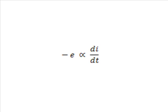Now, mathematically this can be written as minus E proportional to dI/dt. Where minus E is the induced counter EMF, dI/dt is the rate of change of current through the coil with respect to time. The above equation can also be rewritten as minus E equals L into dI/dt, say this is equation 1.